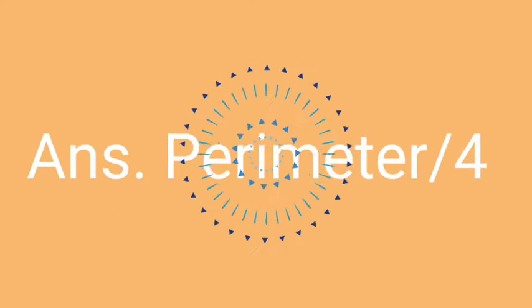The correct answer of this question will be perimeter by 4. Each side of square is equal to perimeter divided by 4.